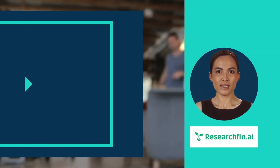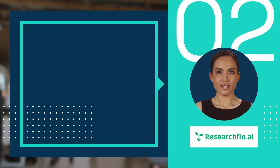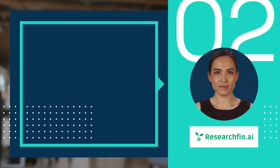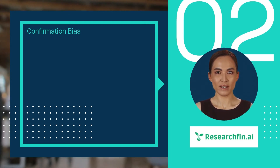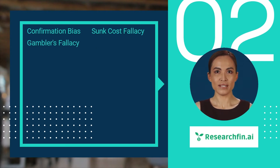How do biases and emotions impact trading? There are various forms of cognitive biases. Confirmation bias is the tendency to focus on information that confirms one's beliefs and ignore information that contradicts them. Sunk cost fallacy is the tendency to continue investing in something due to money or time already invested, regardless of whether it is rational to do so. Gambler's fallacy is the belief that a random event is more likely to happen if it has not happened recently.